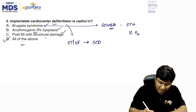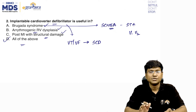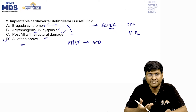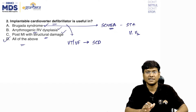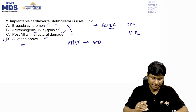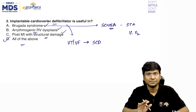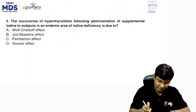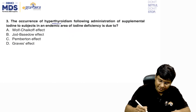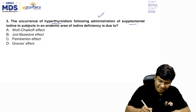Post myocardial infarction with structural damage: that myocardium is highly arrhythmogenic and can cause sudden cardiac death, requiring an implantable cardioverter defibrillator. So the correct answer is all of the above.